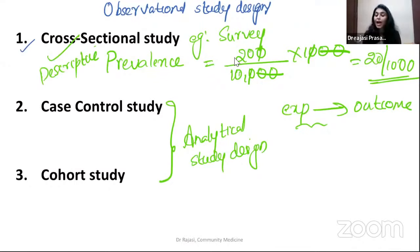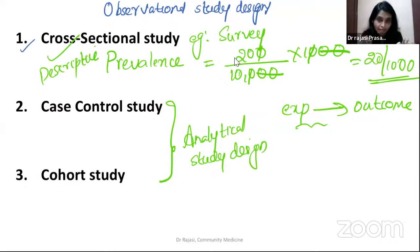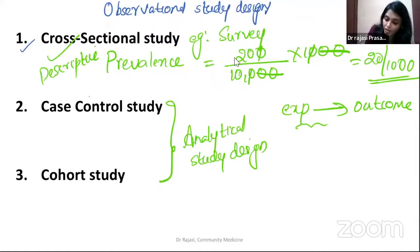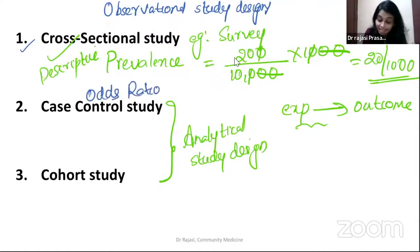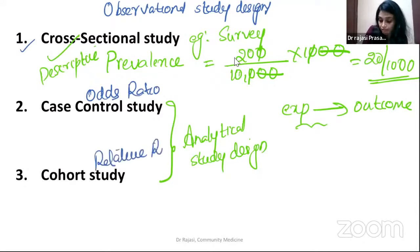To find out whether exposure is a risk factor or protective factor, you calculate the risk measure. The risk measure in case control is odds ratio, and the risk measure in cohort is relative risk.